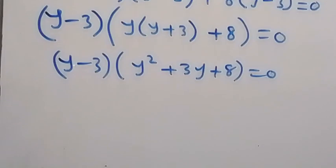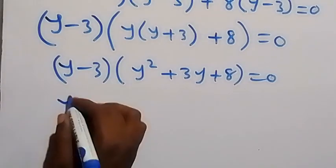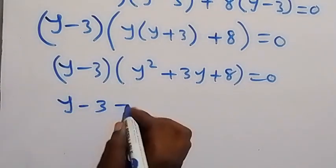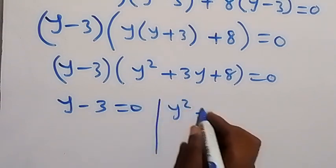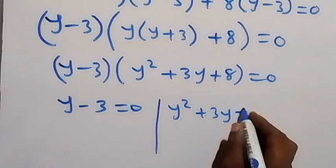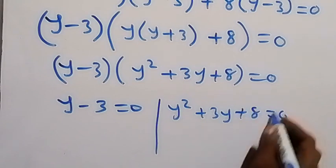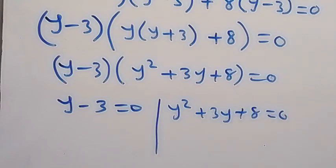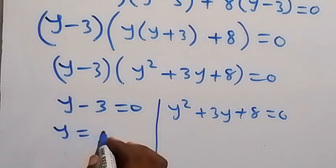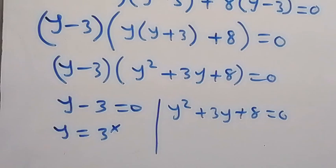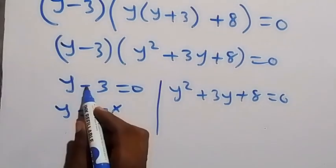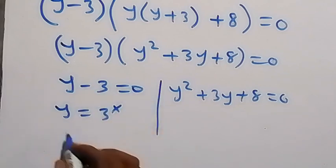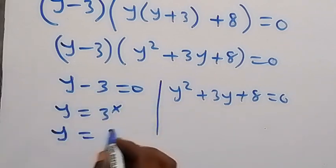From here we have two possible cases: y minus 3 equals zero, or y squared plus 3y plus 8 equals zero. Since we defined y as 3 raised to power x, from the first case we get y equals 3.